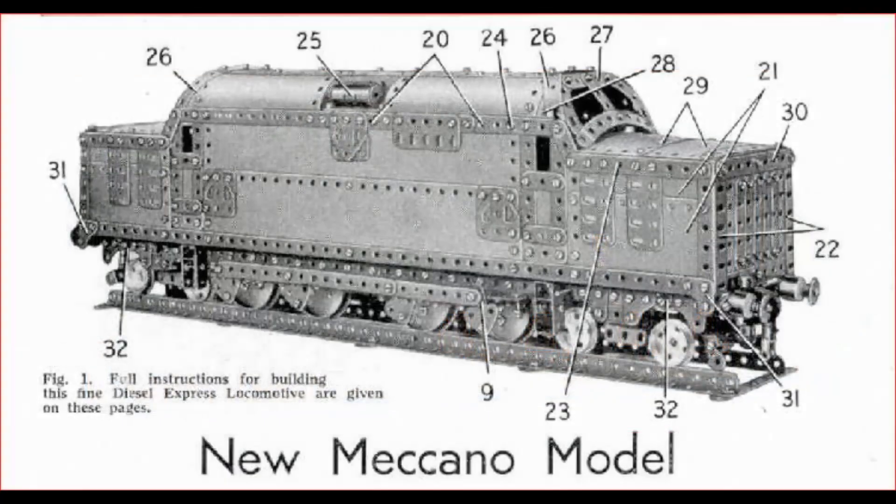There was a Fell locomotive in the October 1953 issue of Meccano magazine. This was very basic and it only had one motor.